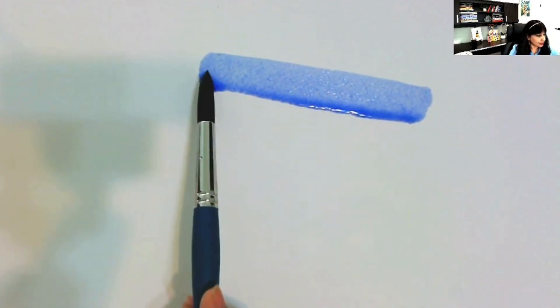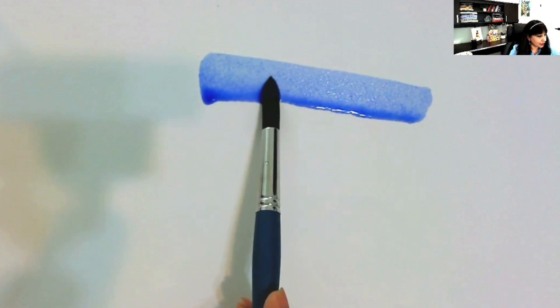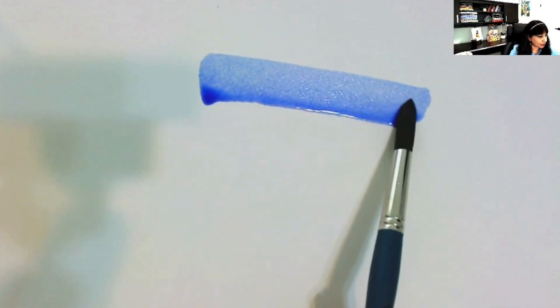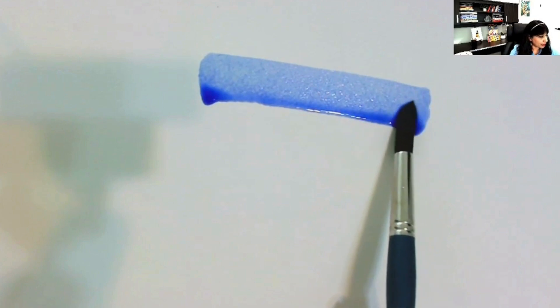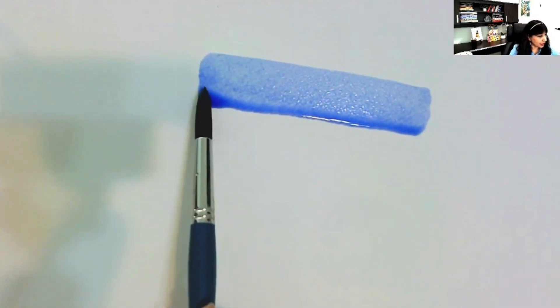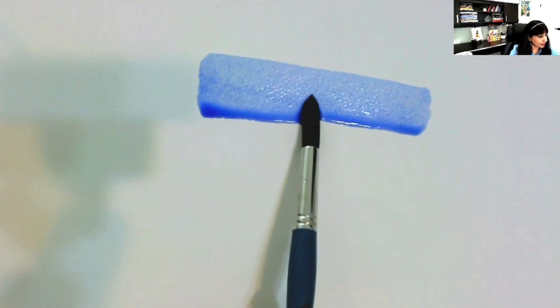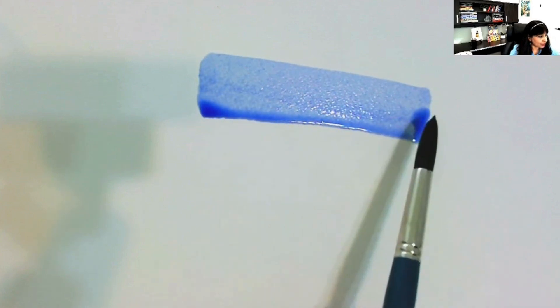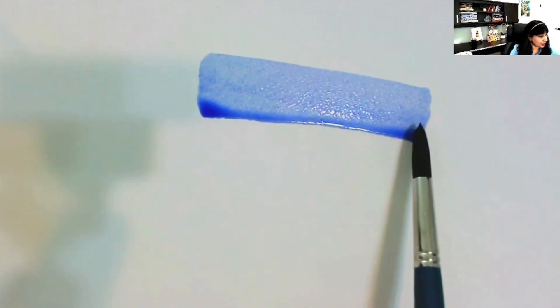Now once the bead is formed, now you can slightly come down. Still you're overlapping it and going from one end to another end. Again taking a little bit more paint and going from second end to the first end and repeating the process. Each time you are overlapping the first brush stroke so that the paint is quite uniformly getting applied.